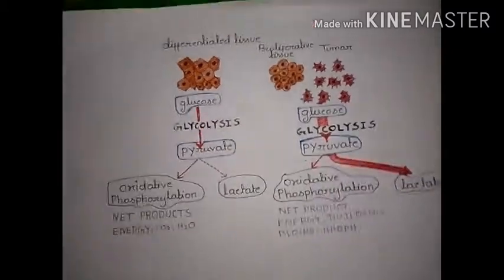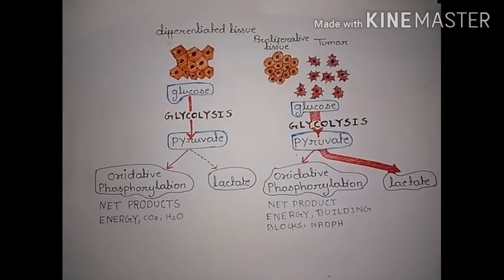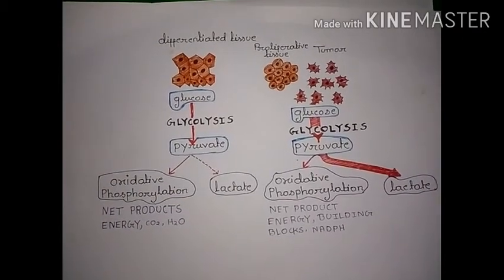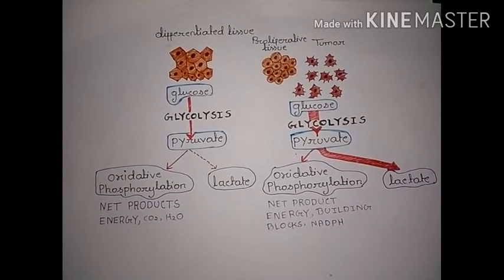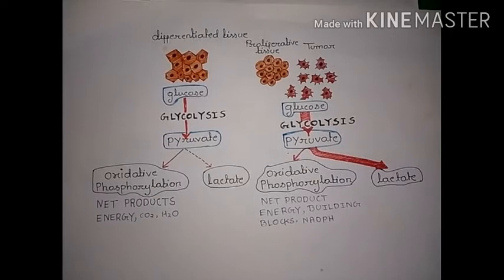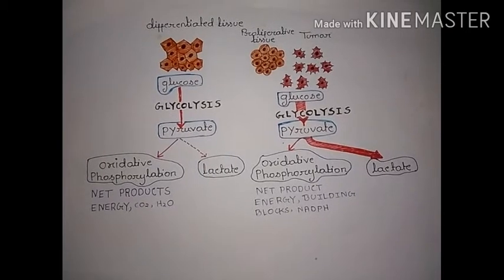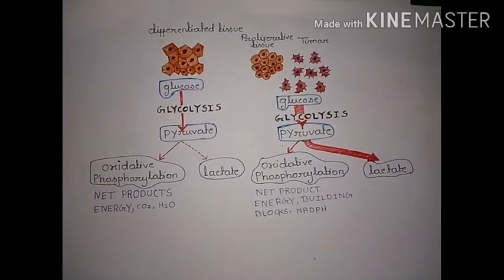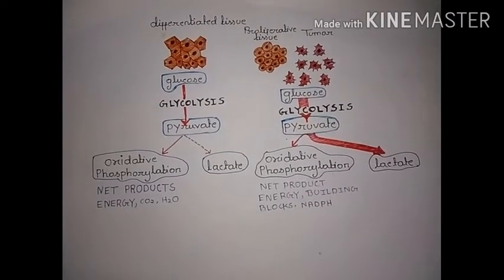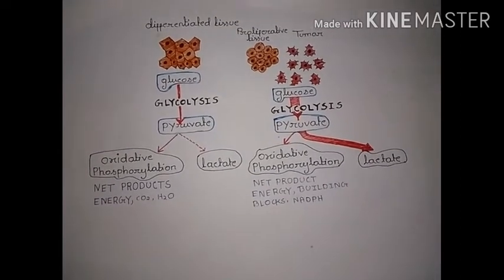Why do tumor cells uptake more glucose than a normal cell? There is a reason behind this. The rate of growth in tumor cells is greater than in normal cells. In case of tumor cells, the process of oxidative phosphorylation is less associated, and the TCA cycle is also less associated.